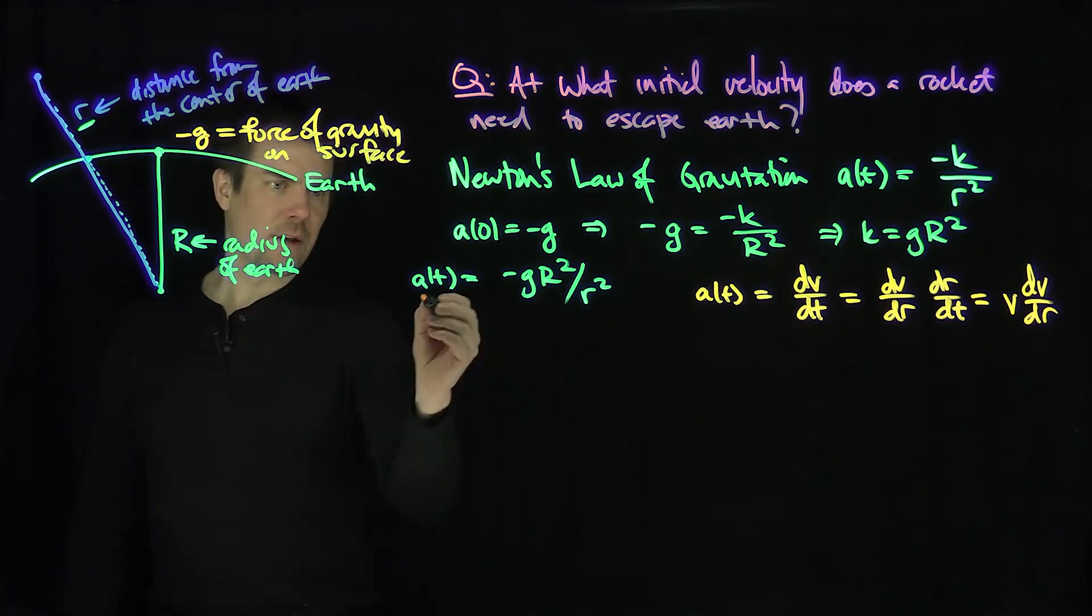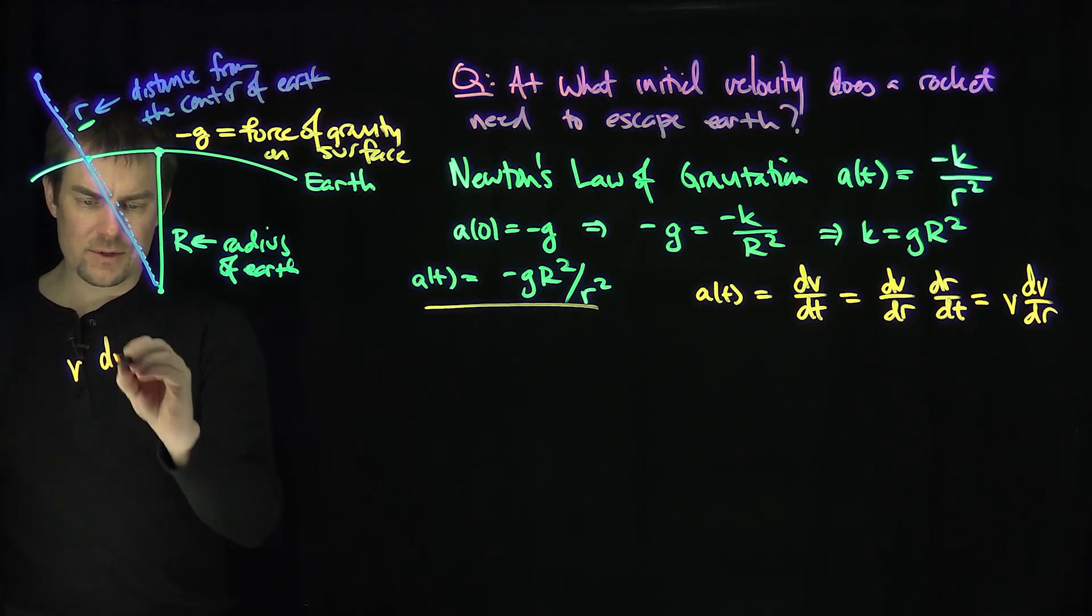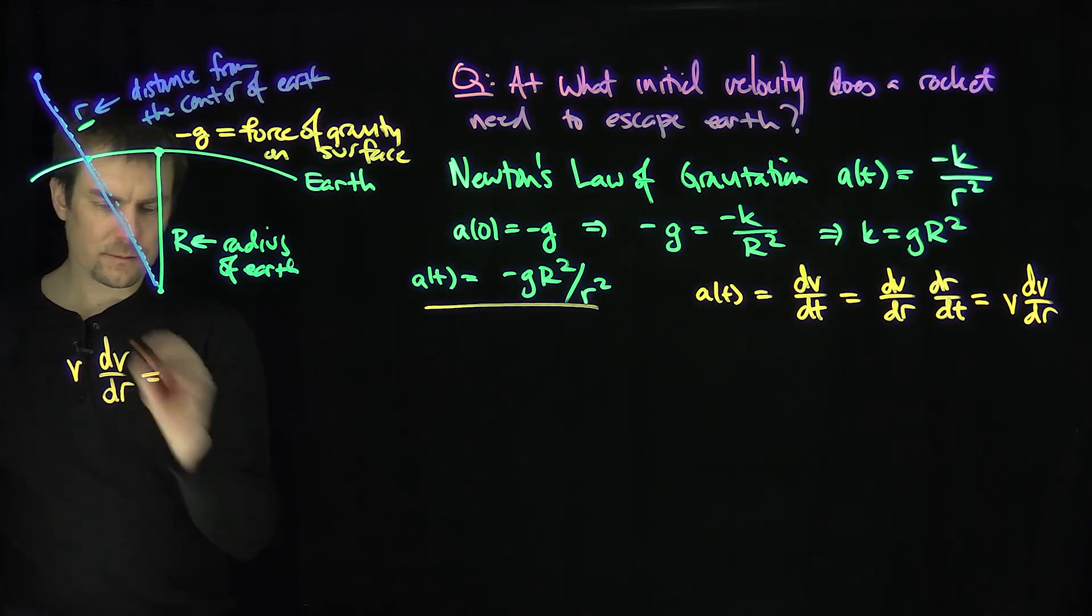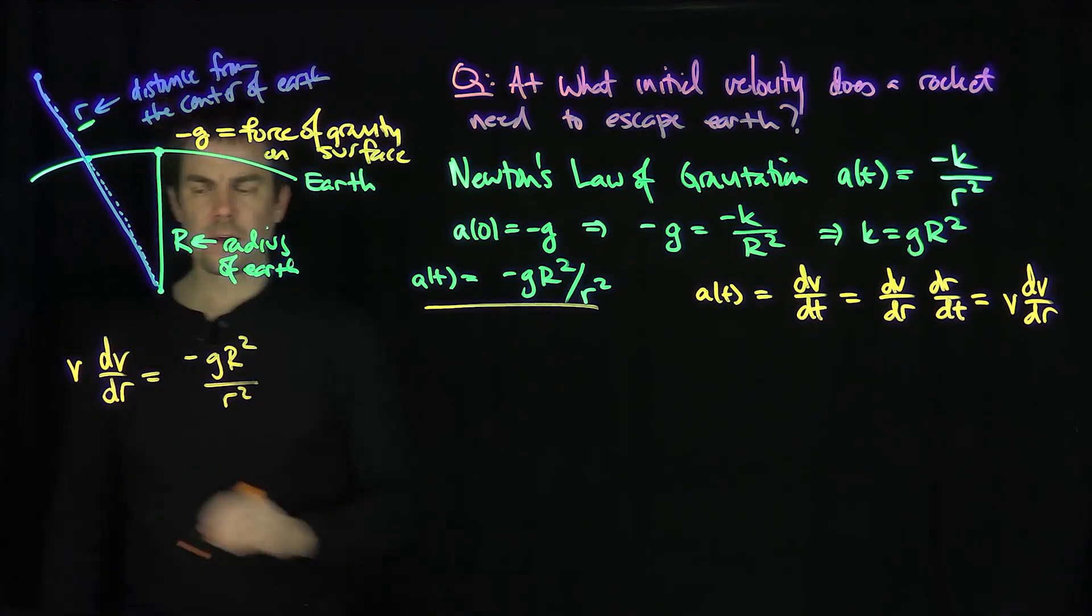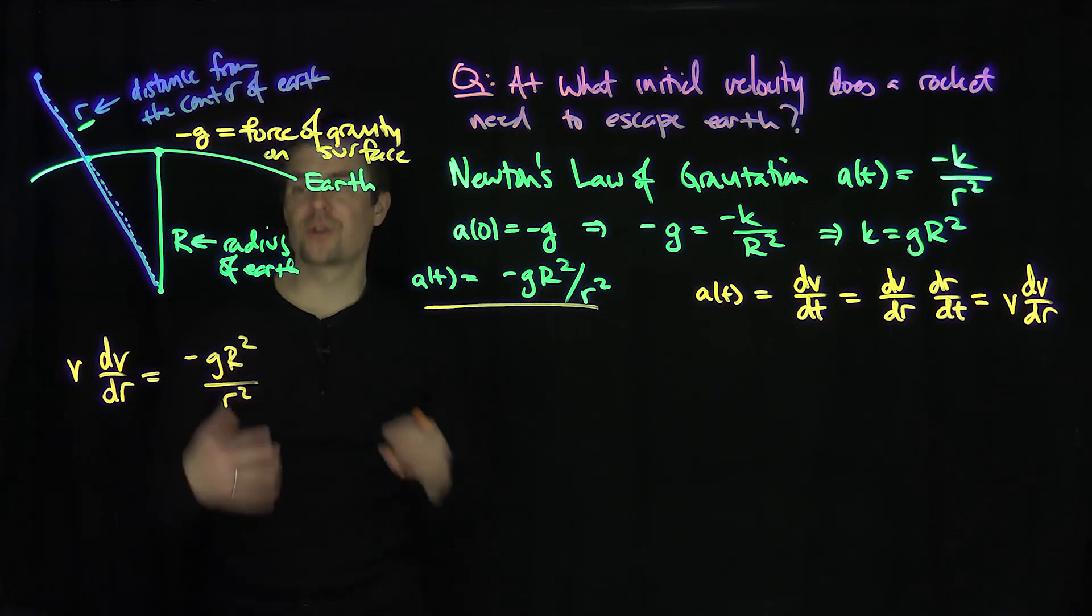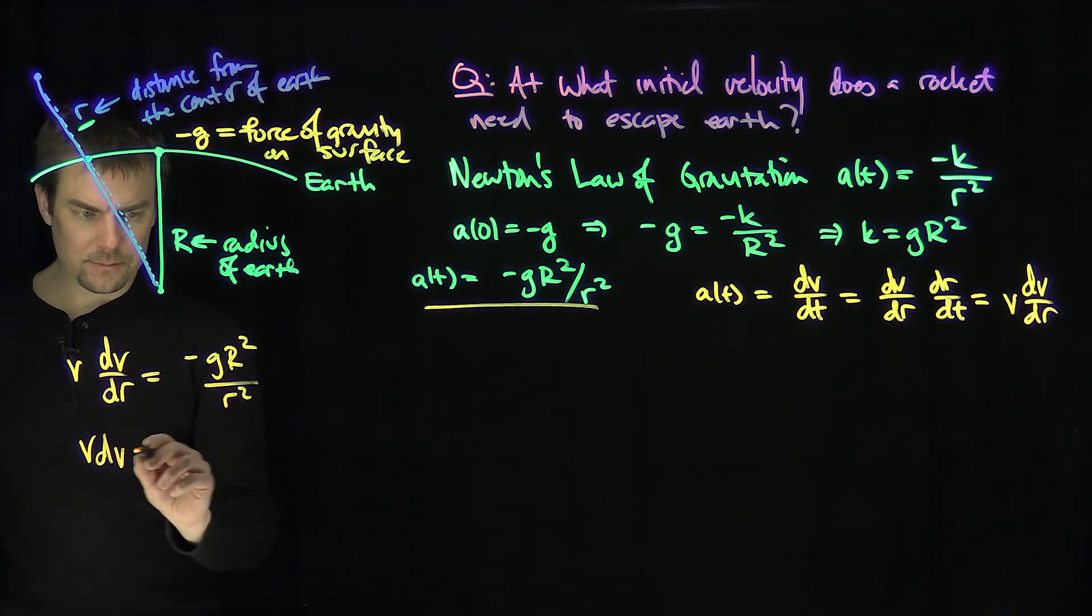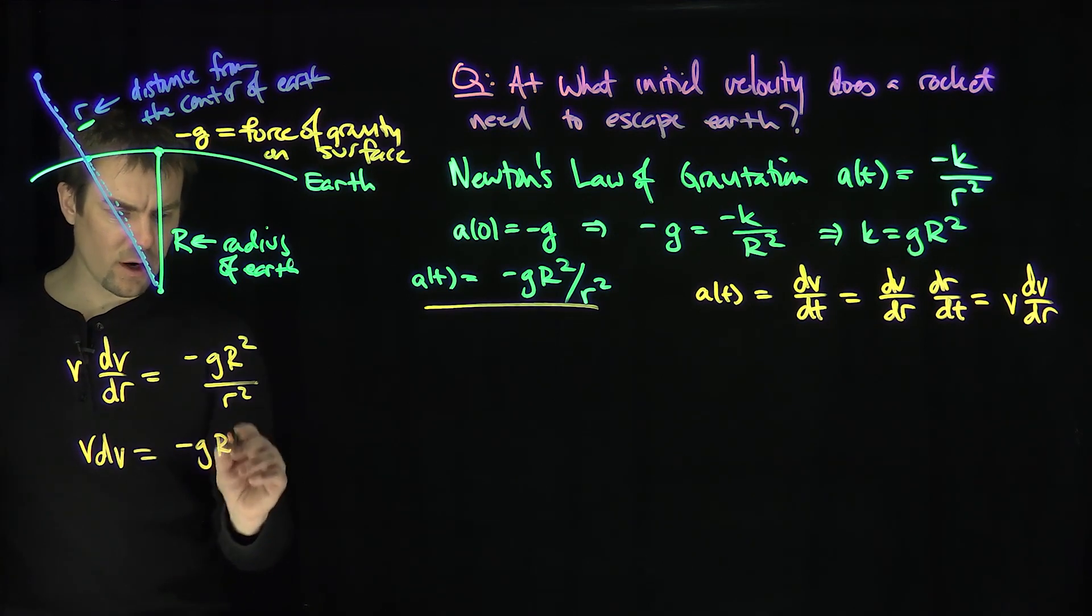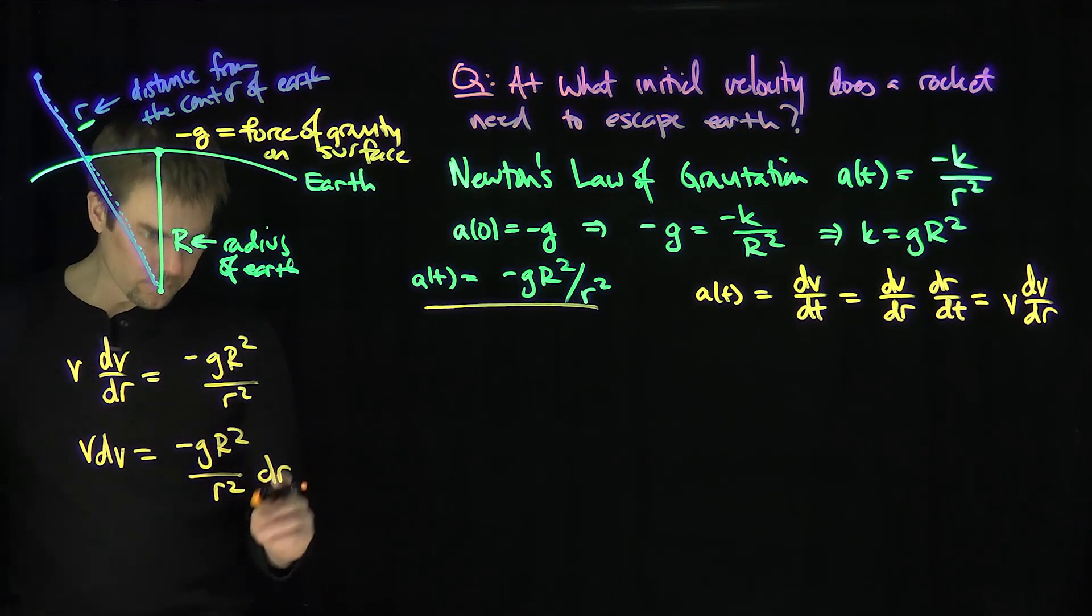So our differential equation is now the following. I can plug that into this equation, and we get the differential equation that v dv/dr equals negative gR squared over little r squared. This is a separable differential equation, so I can separate the variables and get that v dv is negative gR squared over r squared dr.